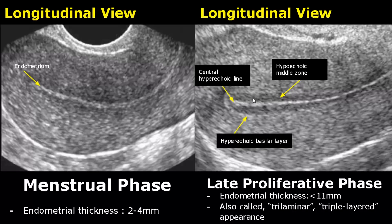Now we have the late proliferative phase, in which the thickness can be up to 11 mm. Here we have three distinct layers: the innermost central hyperechoic line, followed by a hypoechoic middle zone, and the outermost hyperechoic basilar layer. This appearance is known as trilaminar or triple layered.